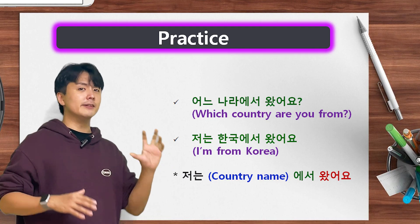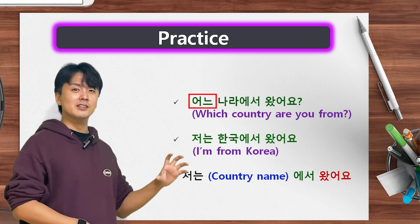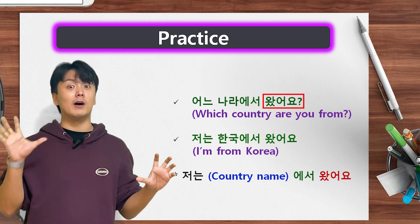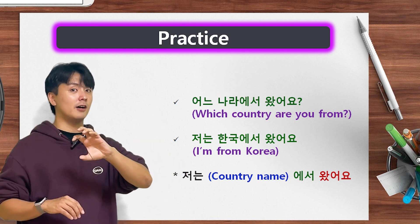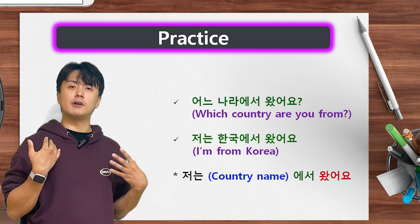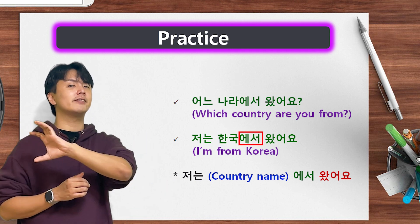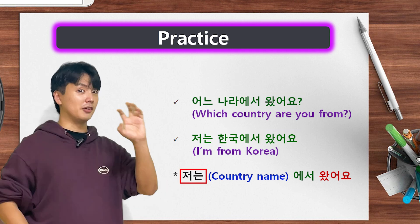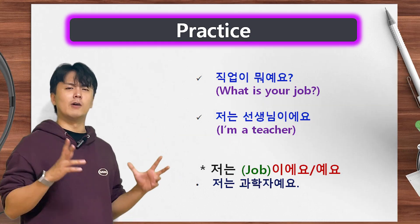And origin — which country are you from? 어느 나라에서 왔어요? 어느 means 'which,' 나라 means 'country,' 에서 means 'from,' and 왔어요 means 'came from.' I'm from Korea — 저는 한국에서 왔어요. The pattern is 저는 [country name]에서 왔어요.